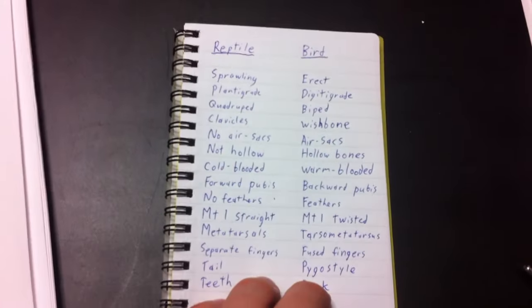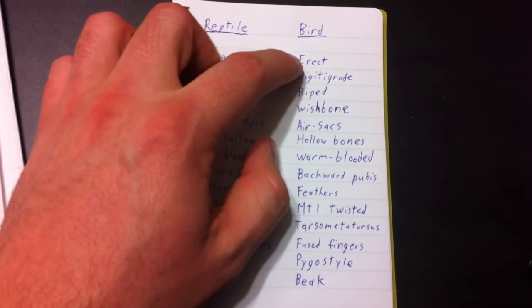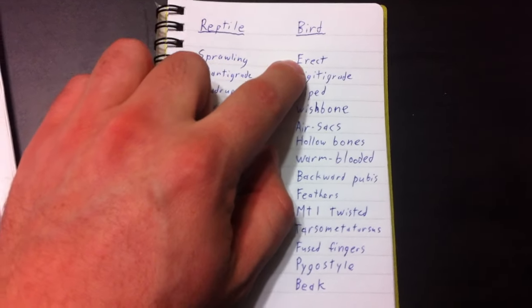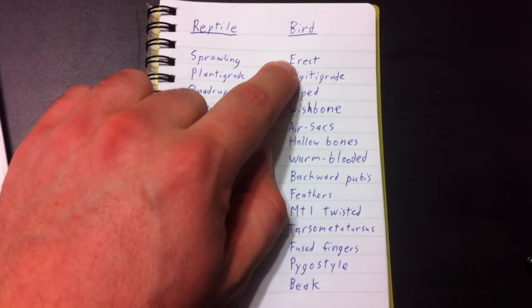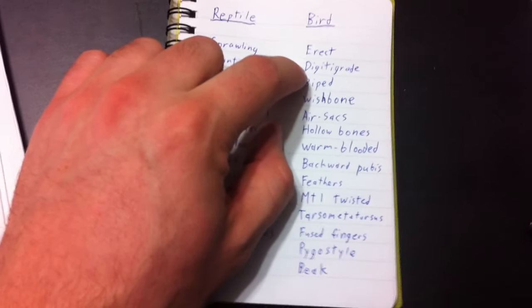So what do we actually see in the fossil record? What happens when we try to apply this definition in the fossil record? Well, do we find reptiles that stand erect like birds, so their legs go straight down from their body, and they're digitigrade? They stand up on their toes. Well, yes, we do. They're called dinosaurs.